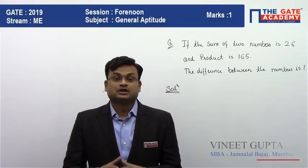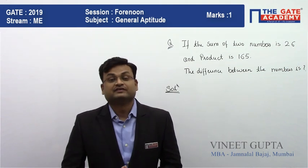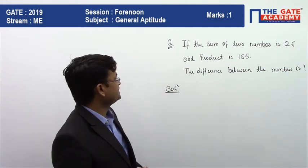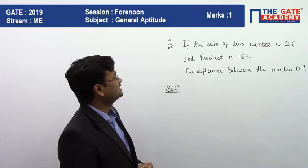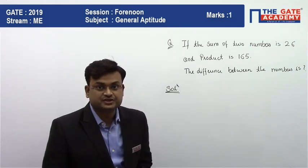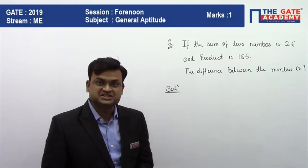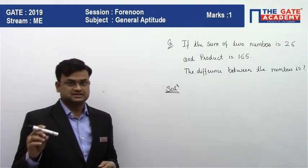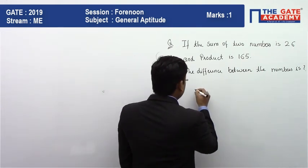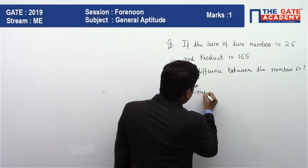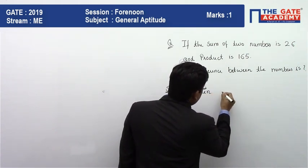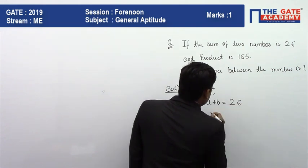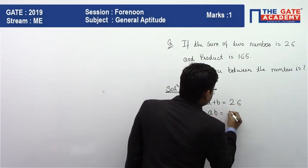In this video we'll be solving a question of general aptitude from the algebraic expressions chapter. The question says: if the sum of two numbers is 26 and the product is 165, what is the difference between the numbers? Assuming the numbers as a and b, the given data is a plus b equals 26 and a into b equals 165.